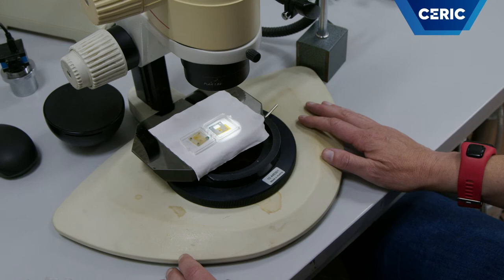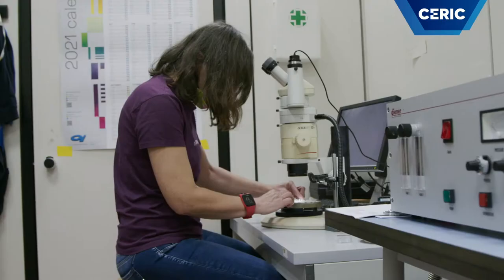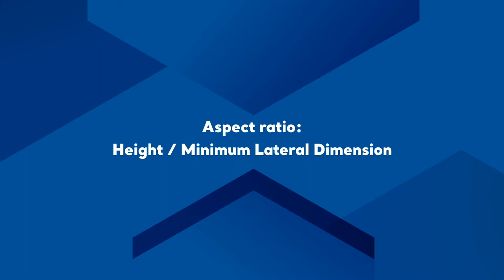We can also irradiate very thick samples of the order of 1 mm, therefore obtaining a very high aspect ratio, which is the ratio between the height and the minimum lateral dimension.